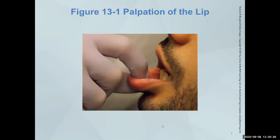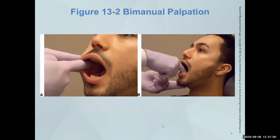Here is a picture showing palpation of the lip — what type of palpation is it? It's bi-digital, using the forefinger and the thumb. Then there's bi-manual palpation using two hands for the buccal mucosa and the floor of the mouth.